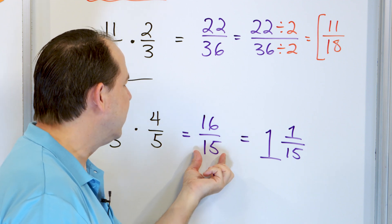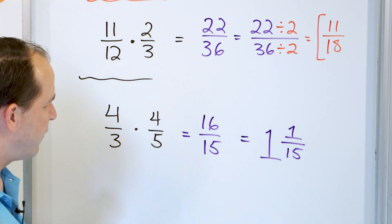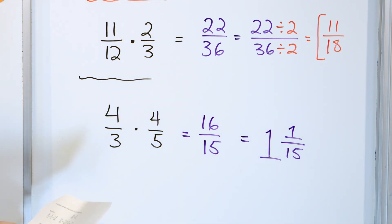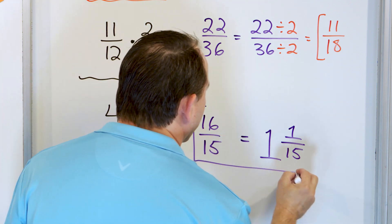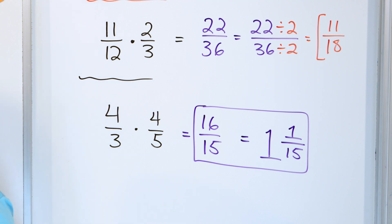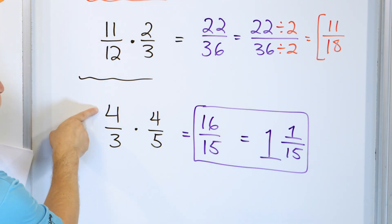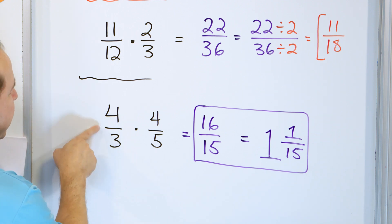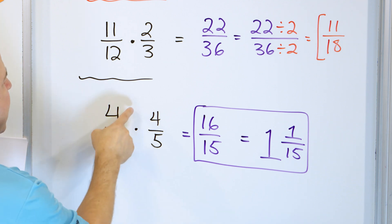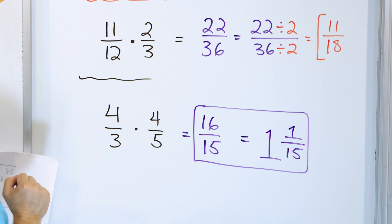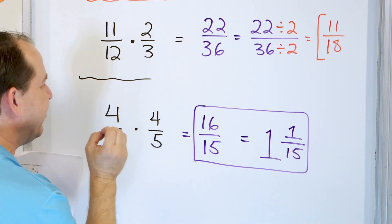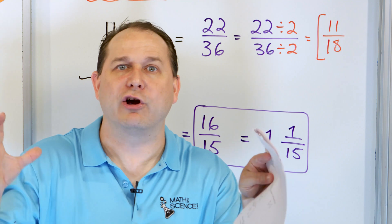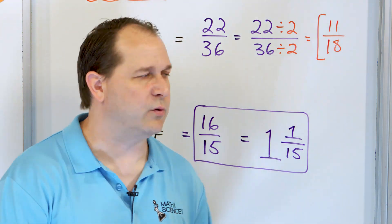How do we convert sixteen fifteenths to a mixed number? Fifteen goes into sixteen one whole time with one left over, and everything is in terms of fifteenths. So sixteen fifteenths equals one and one fifteenth. We got an answer bigger than one because we started with four thirds, which converts to one and one third — already bigger than a whole pizza — and we multiplied by four fifths, which is close to one. So sometimes you get an answer bigger than one when you start with an improper fraction.